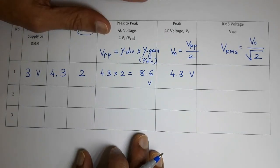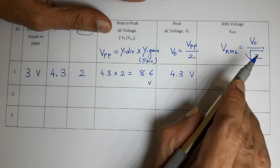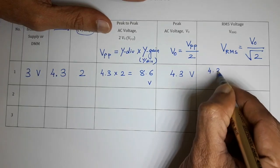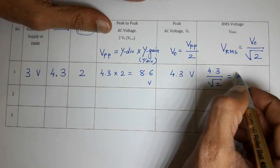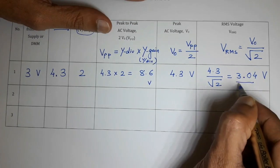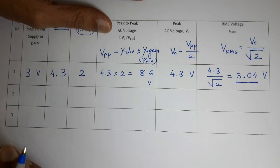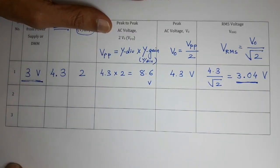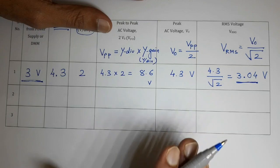Now calculate Vrms — the root mean square value of voltage. The formula is Vrms = V0 ÷ √2. Our V0 is 4.3, so Vrms = 4.3 ÷ √2 ≈ 3.04 volts. This is our final answer — the experimental value from the CRO. We are getting almost the same value as the multimeter reading, which confirms our calculation is correct.